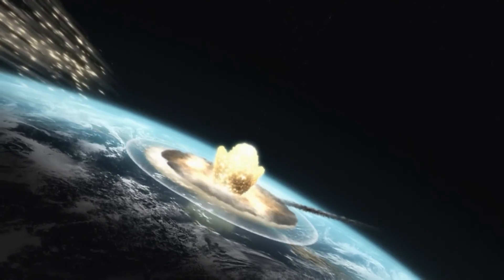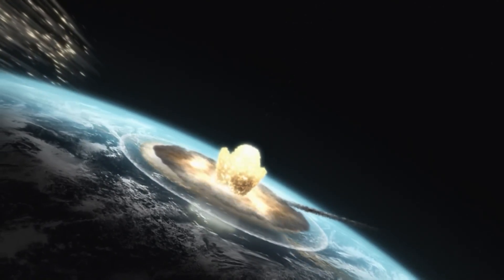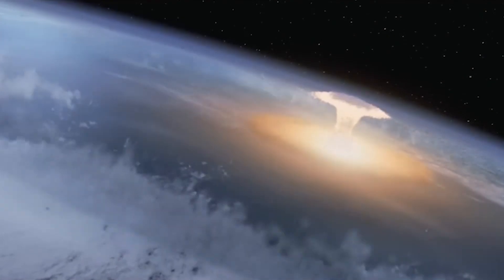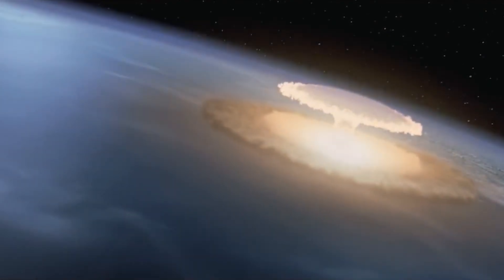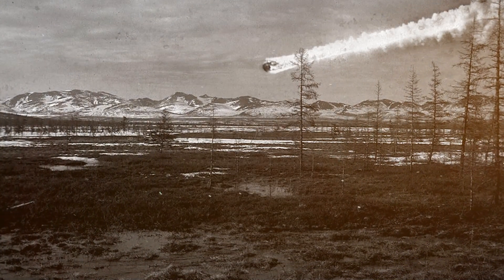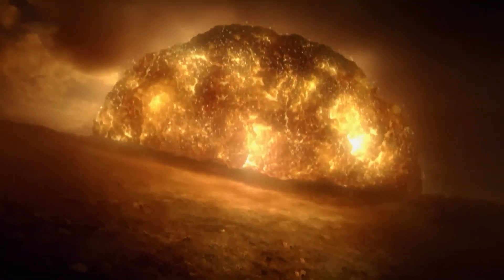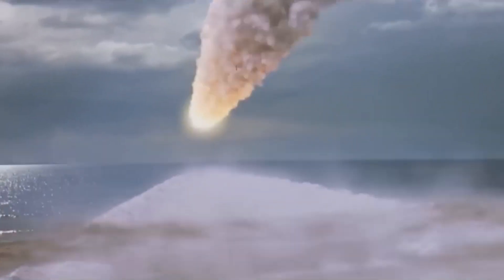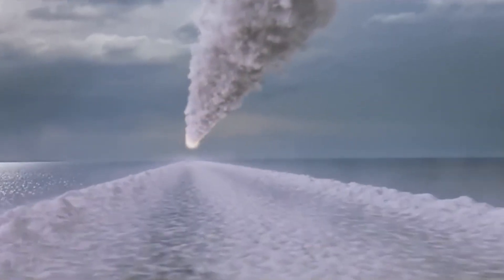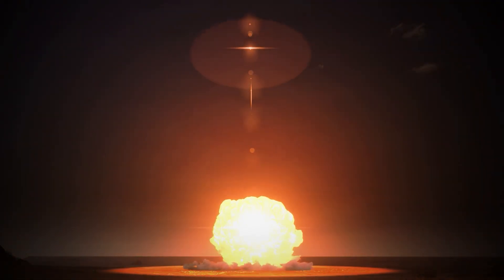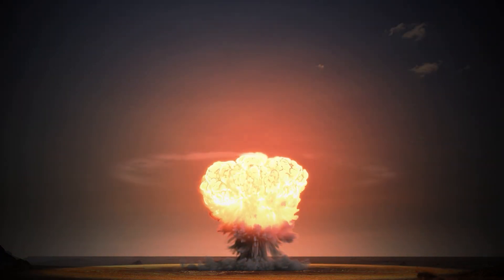Tunguska got way more bang for its buck, and no one could explain why. Most tellingly, the AI showed that the shockwaves from Tunguska were weirdly contained, almost focused downward. The Chelyabinsk event showed a classic blast wave spreading energy out in all directions in a predictable way. But Tunguska's energy seemed directed, as if it was constrained by an invisible funnel.